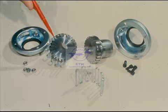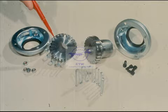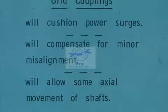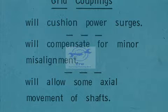This is a grid coupling. It does require lubrication, since, as with the gear coupling, there is metal-to-metal contact between this grid and the slots and the hubs. However, the spring steel of the grid adds a number of advantages. A big advantage is that the grid coupling smooths out sudden or abrupt power surges through the spring action of the steel grid. The grid also allows the coupling to compensate for minor misalignment and for some axial movement of the shaft. All in all, the grid coupling is very useful in a wide variety of applications.